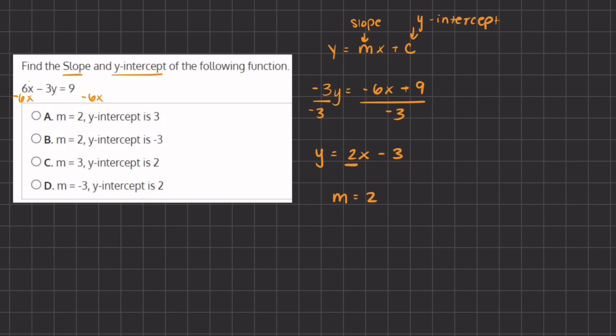So if we take a look at our answers, answer B represents our slope and our y-intercept, and therefore B will be our final answer for this problem.